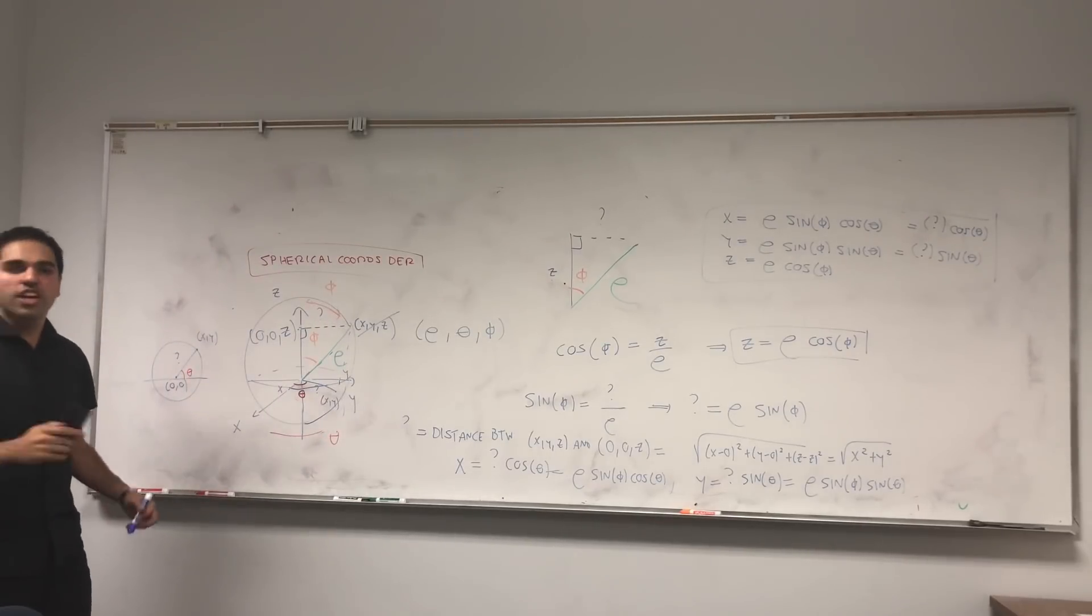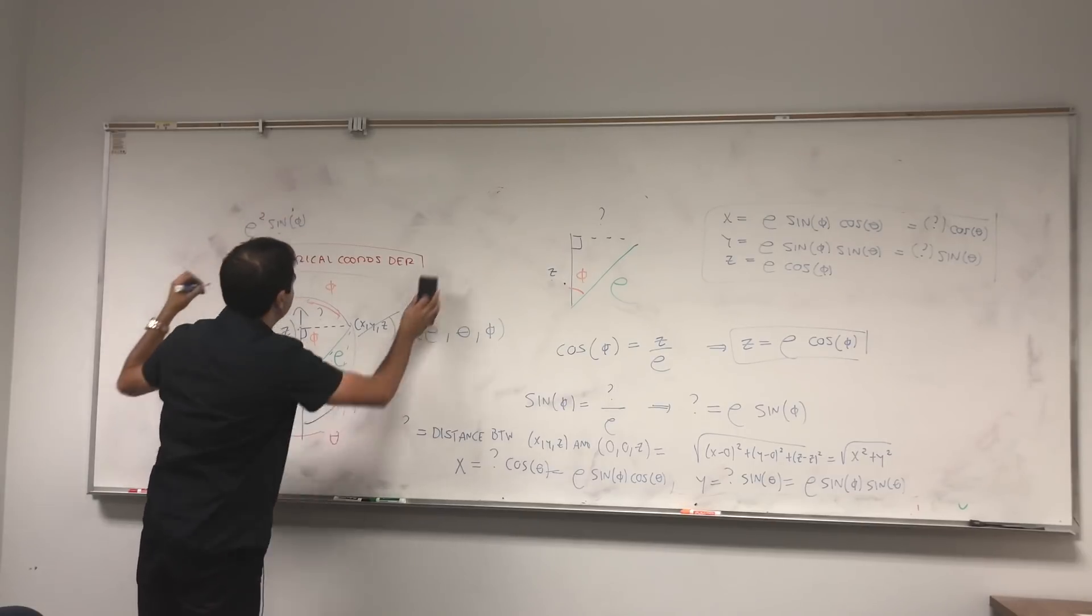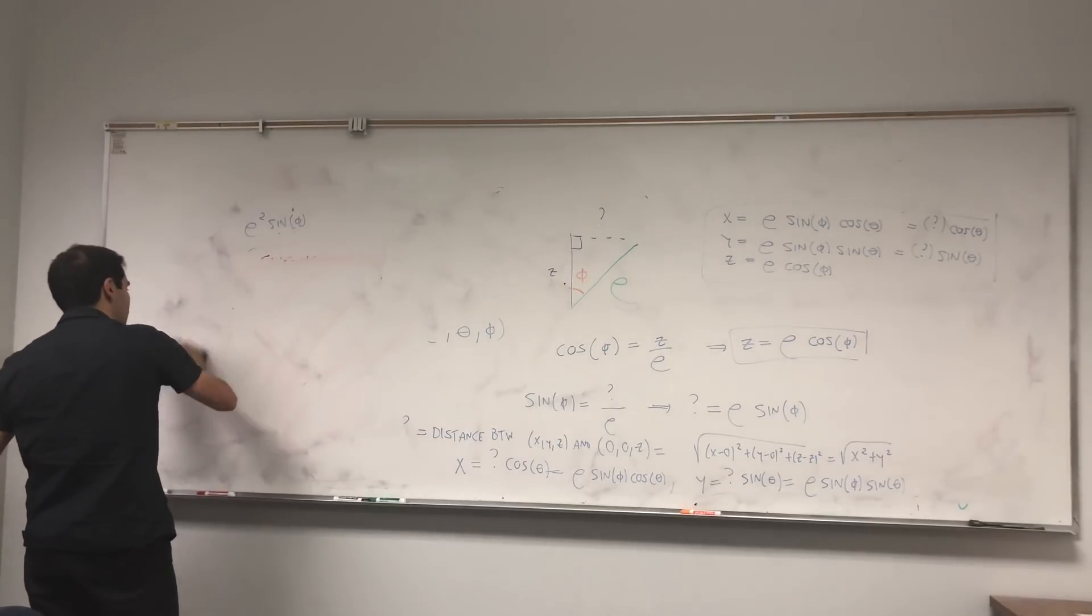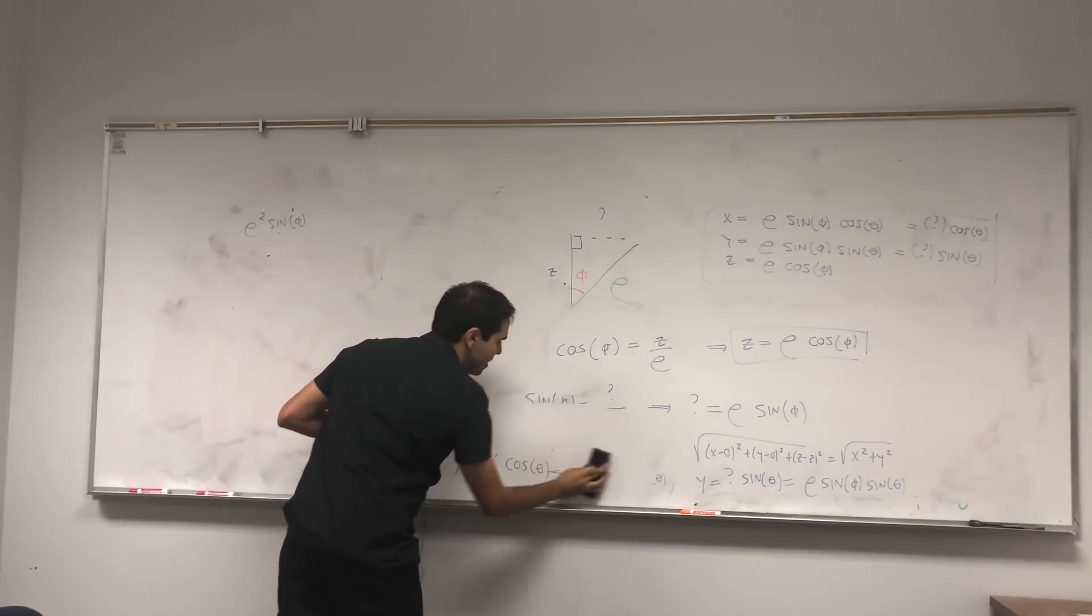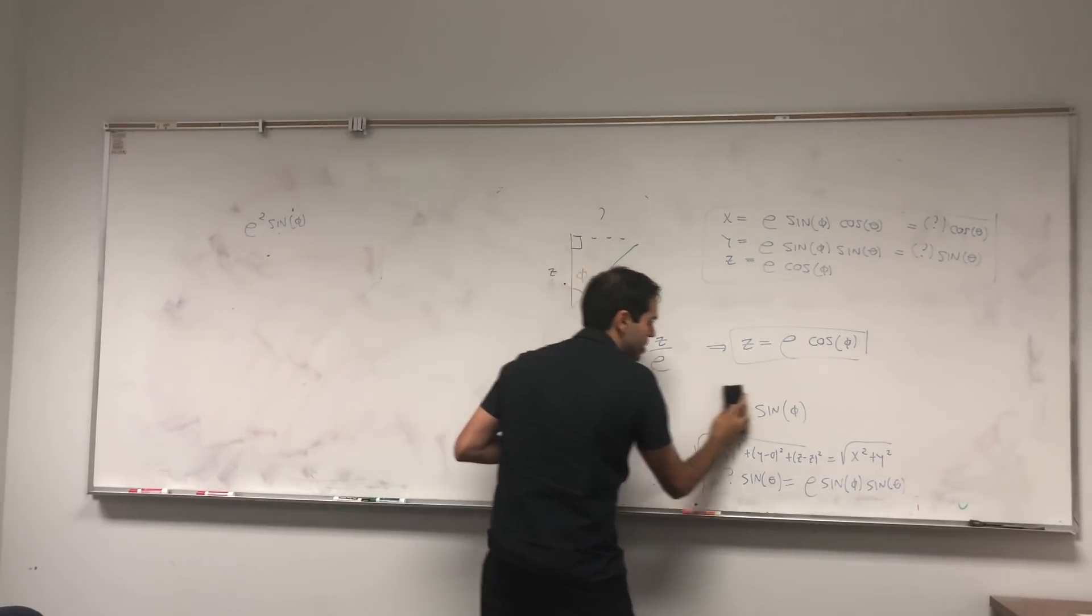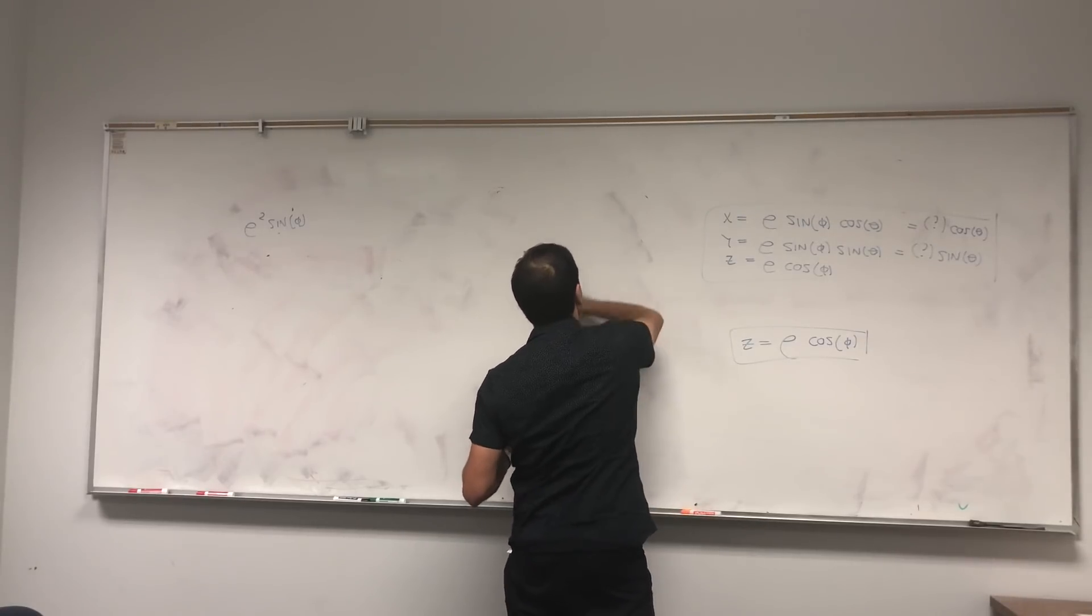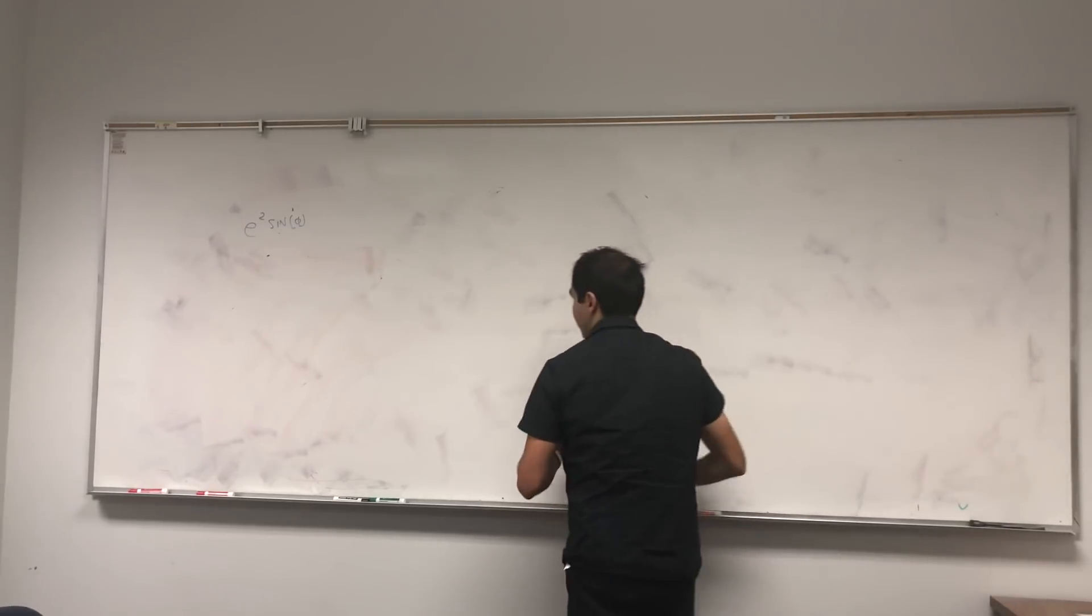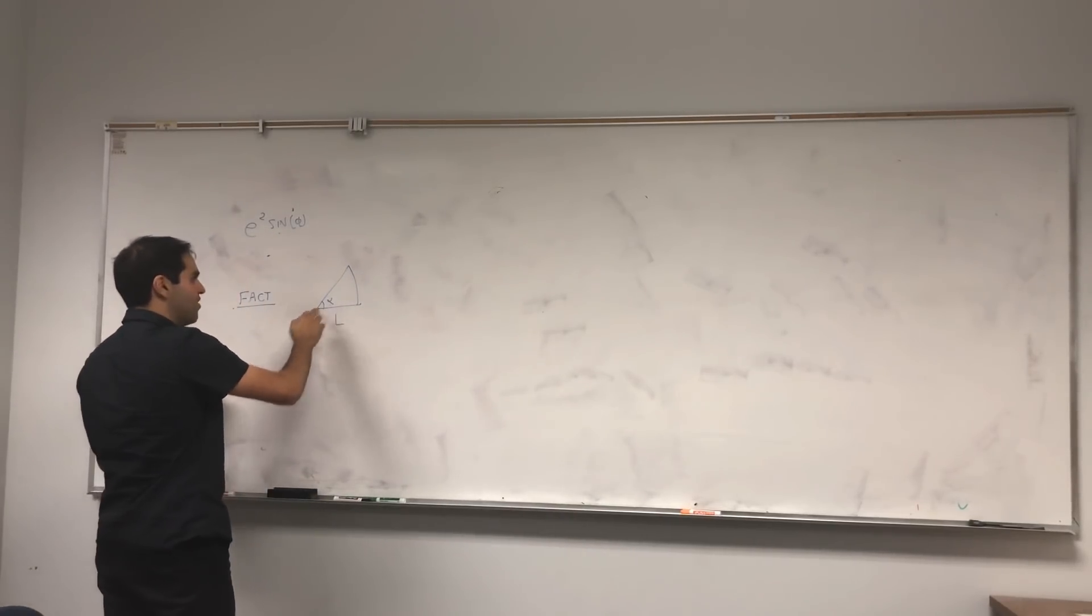The next order of business, I want to derive the Jacobian rho squared sine phi. So, intuitively, why do we get a rho squared sine phi in the Jacobian? And I'm not going to do it rigorously with the definition of the Jacobian. I just want to tell you intuitively how you get it. And for this, you have to know the following thing. So, fact,